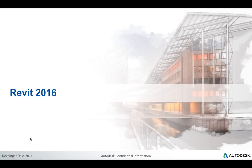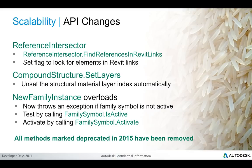In previous discussions of the Revit API news we separated the topics into rice and wine — rice affecting existing applications and wine covering all the new functionality. In this case we have one single slide about changes affecting existing applications. It deals with the topics of linked files and loading of families, obviously both very important areas for handling large projects.